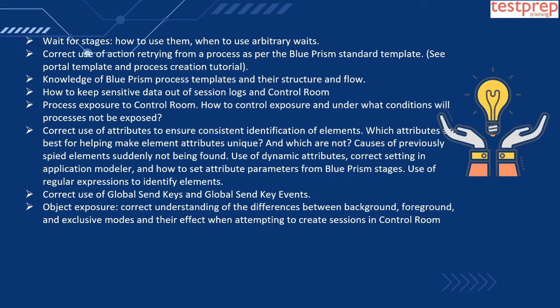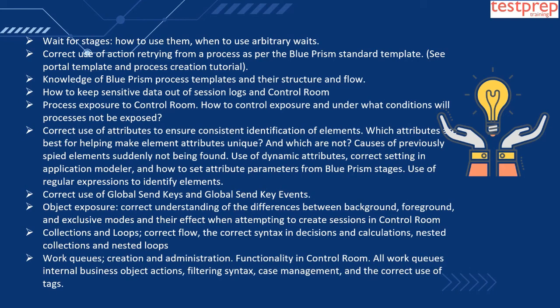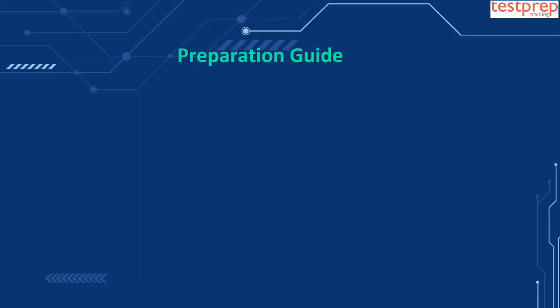Sixteen, correct use of global send keys and global send key events. Seventeen, object exposure: correct understanding of the differences between background, foreground, and exclusive modes and their effect when attempting to create sessions in control room. Eighteen, collections and loops: correct flow, correct syntax and decisions and calculations, nested collections and nested loops. Nineteen, work queues: creation and administration, functionality and control room, all work queue internal business object actions, filtering syntax, case management, and correct use of tags.